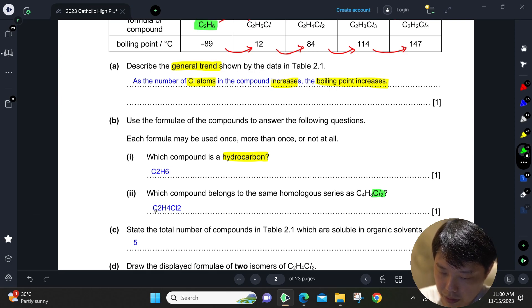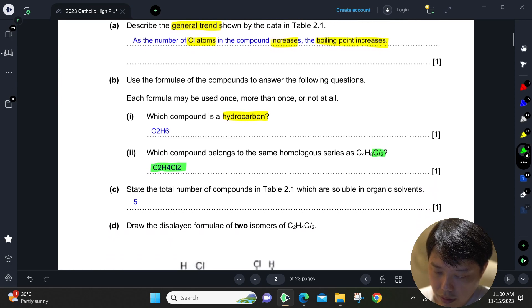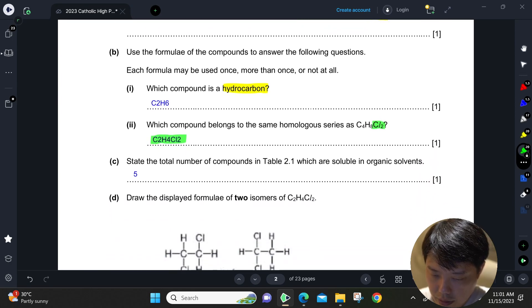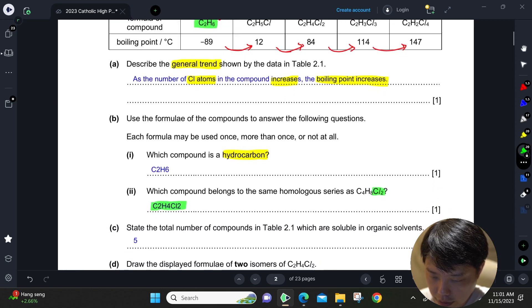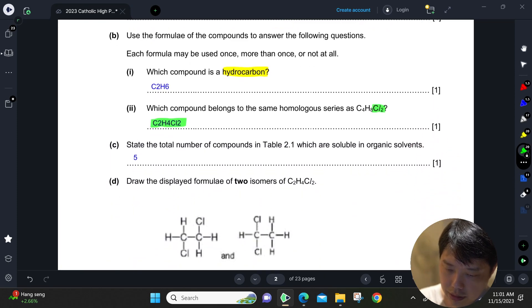What is the total number of compounds in table 2.1 which are soluble in organic solvent? So all of them are soluble in organic solvent, so the answer is five.